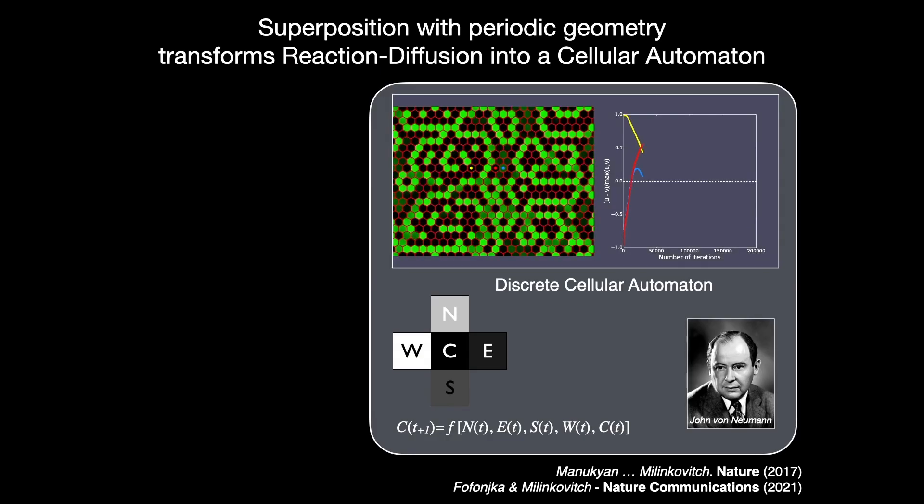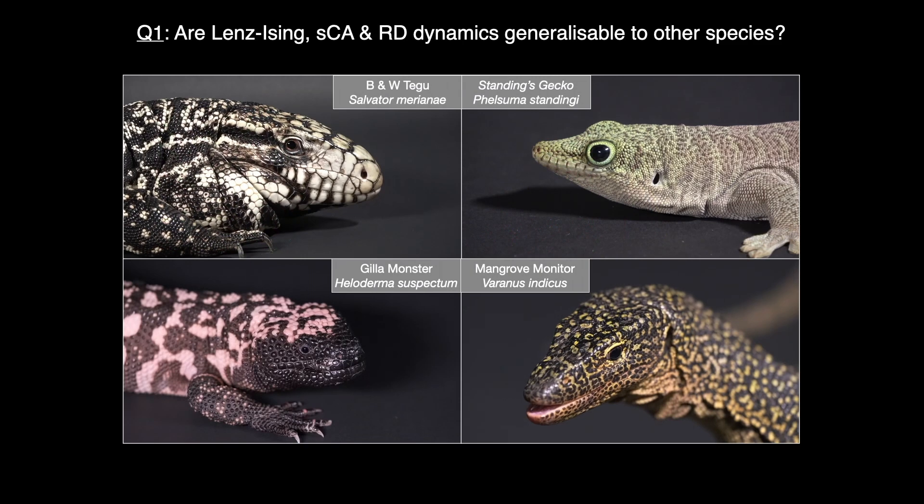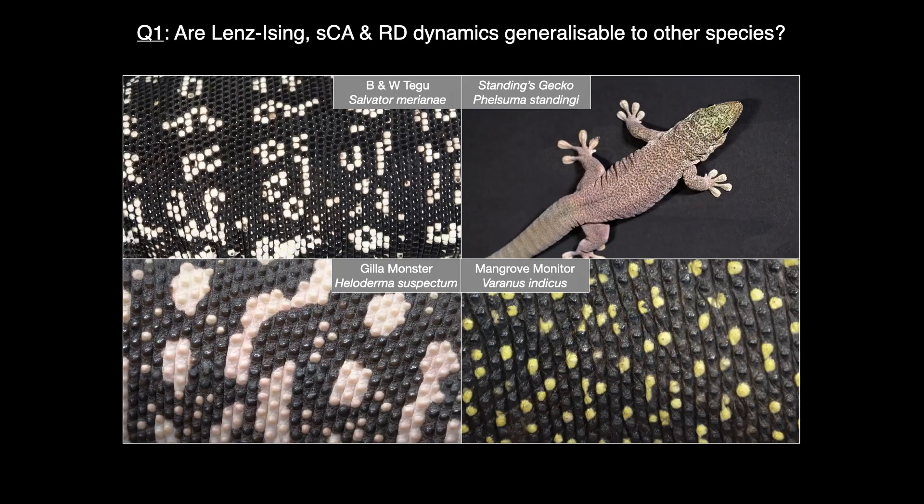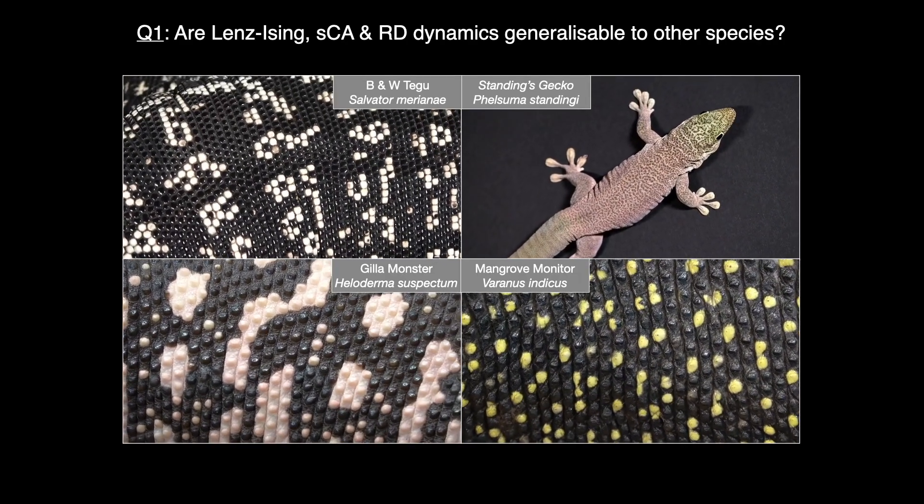We have also shown that this discrete CA emerges from continuous RD because of the reduction of skin thickness at the borders of skin scales. However, can we generalize these dynamics to other species? To answer this question, we investigate four additional divergent species that independently evolved CA dynamics.